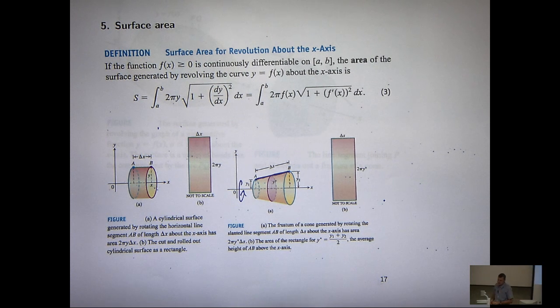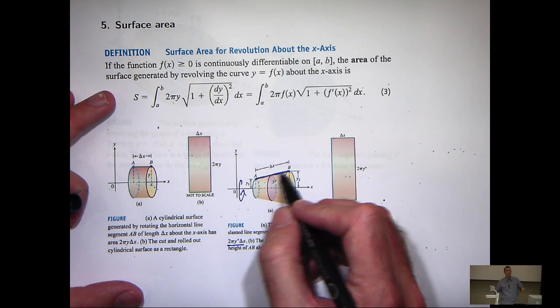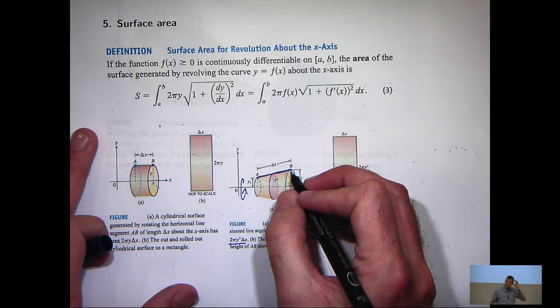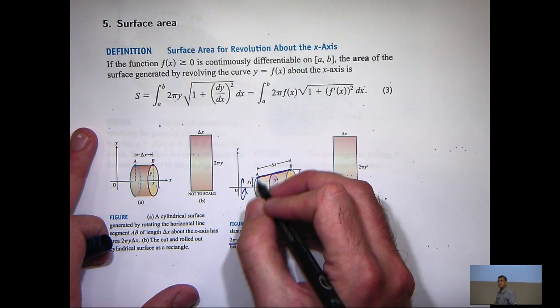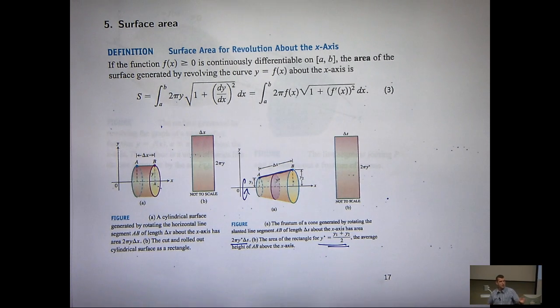Now, the area for that frustum is just given down here. This can be thought of as the slant height, this delta s, and you've got two radii here, y1 and y2. So to calculate the surface area, you average the radii and you multiply through by pi times the slant height, delta s.